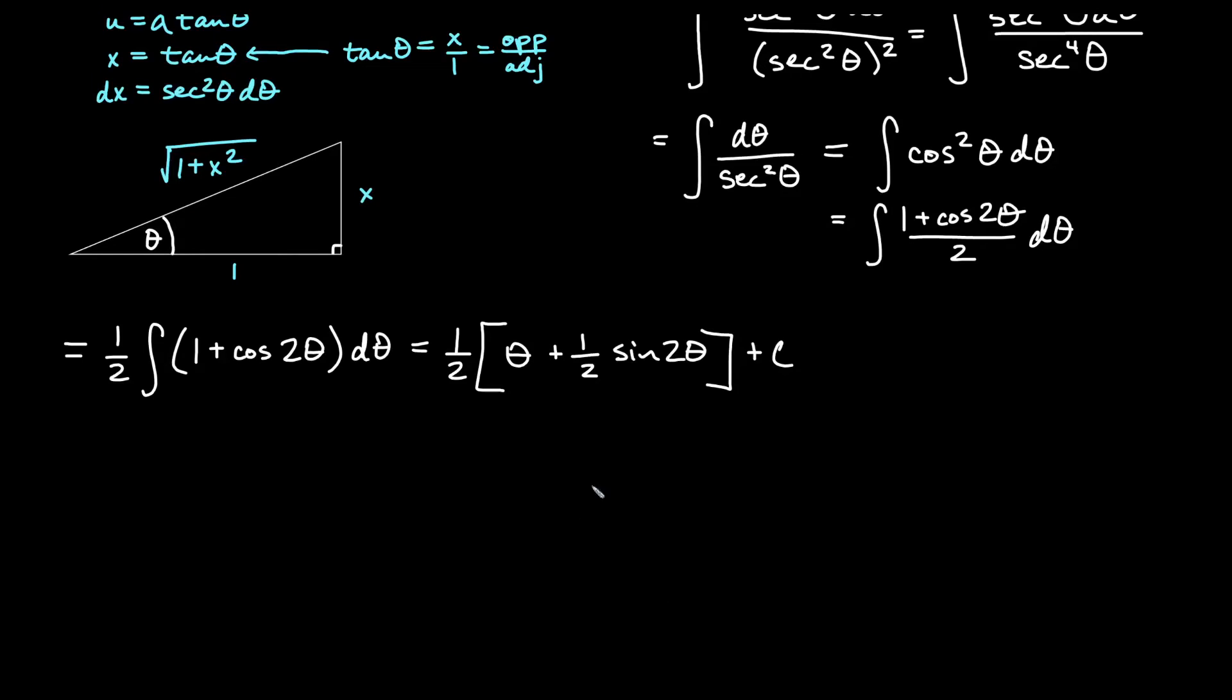Okay, so we'll need to replace these things. First of all, θ. Replacing θ, since tan θ = x, then this original statement would give us that θ = arctan x. So this will be arctan x here. And then sine of 2θ. Since I don't have 2θ in my triangle, I need to get this just in terms of θ. And so we would write sin 2θ as 2 sin θ cos θ.